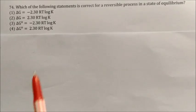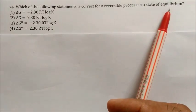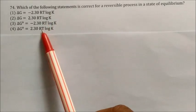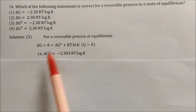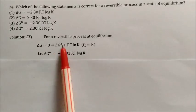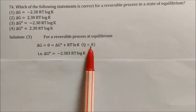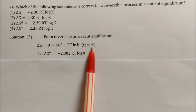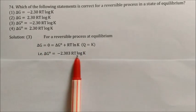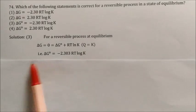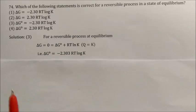Question: Which statement is correct for a reversible process at equilibrium? Using ΔG = ΔG° + RT ln Q. At equilibrium, Q = K, so ΔG° = −RT ln K. This means ΔG = 0 at equilibrium. Option 3 matches this relationship. Answer: option 3.